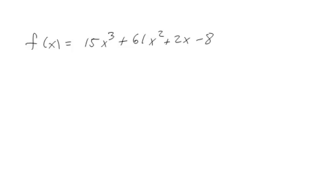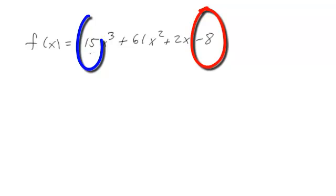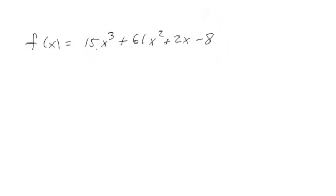Okay, so the first thing we need to do is list all the possible rational zeros. Remember the way that we do that is we look at the constant term, we look at the leading coefficient, and then we divide all of the factors of the constant term by all of the factors of the leading coefficient, and that gives us the list of possible rational zeros.